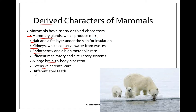Differentiated teeth — this is one of the first times that we're going to actually start to see different shaped teeth, so things like incisors versus molars. Most other groups of animals have teeth that all look pretty much the same.